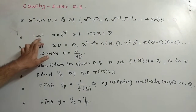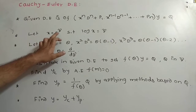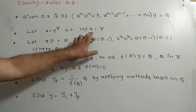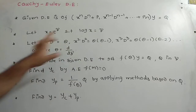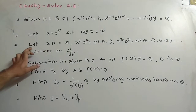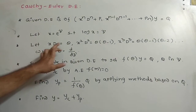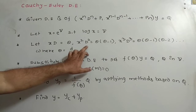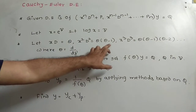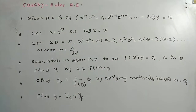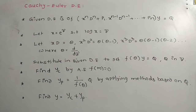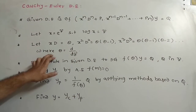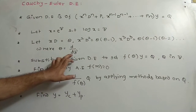You start with x equal to e^z, such that log x equals z. Then you suppose: x·d equals theta, x²·d² equals θ(θ-1), x³·d³ equals θ(θ-1)(θ-2), and so on, where theta stands for d/dz.